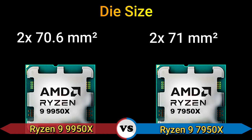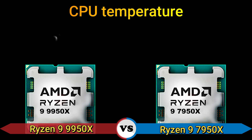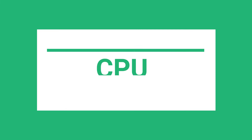Die size: 2 x 70.6 mm and 2 x 71 mm. Thermal design power: 170 watts. CPU temperature: 95 degrees Celsius. Part 2.